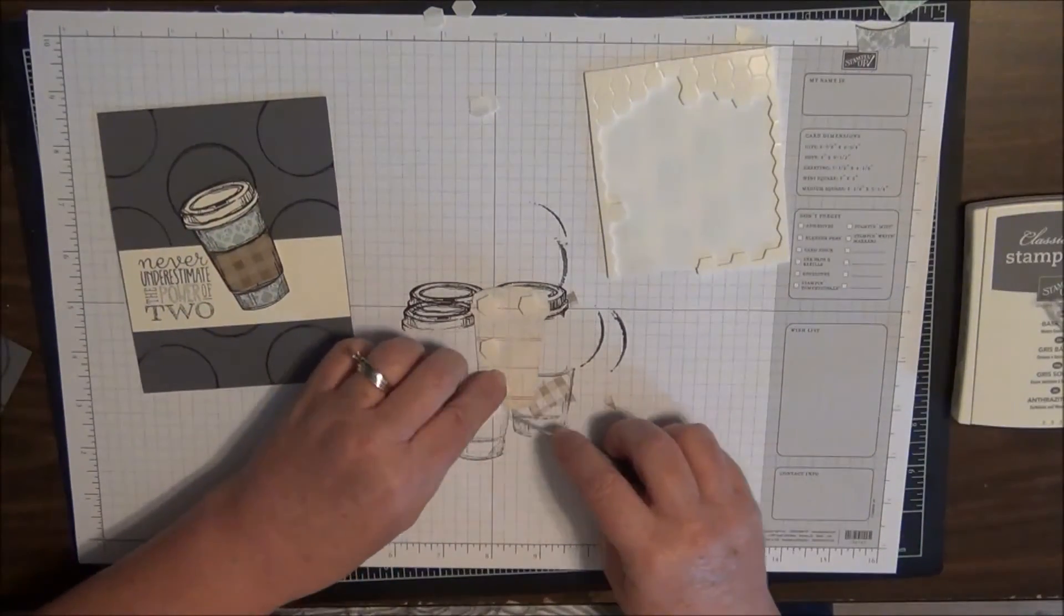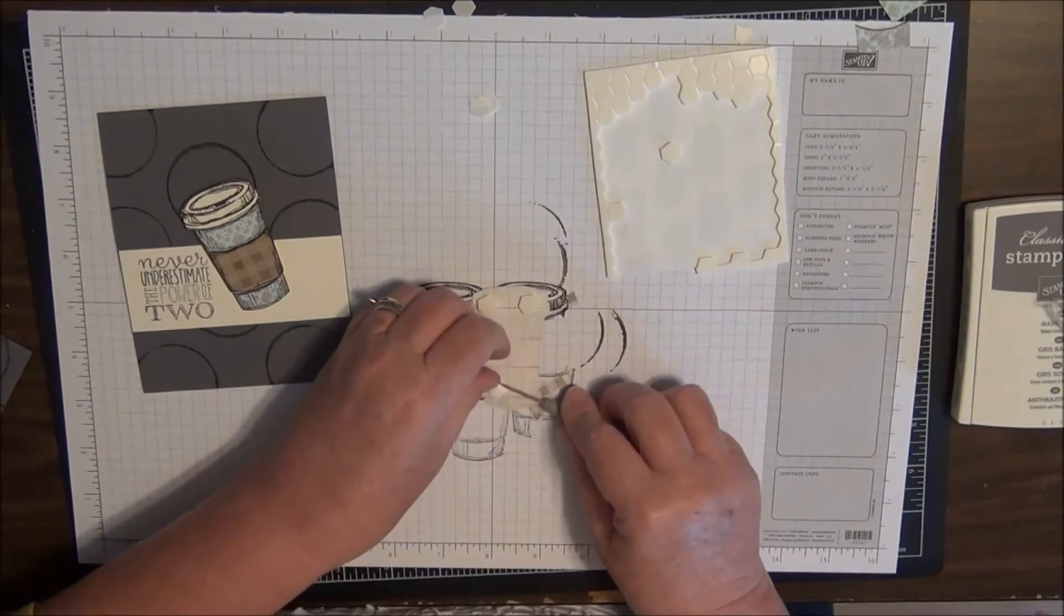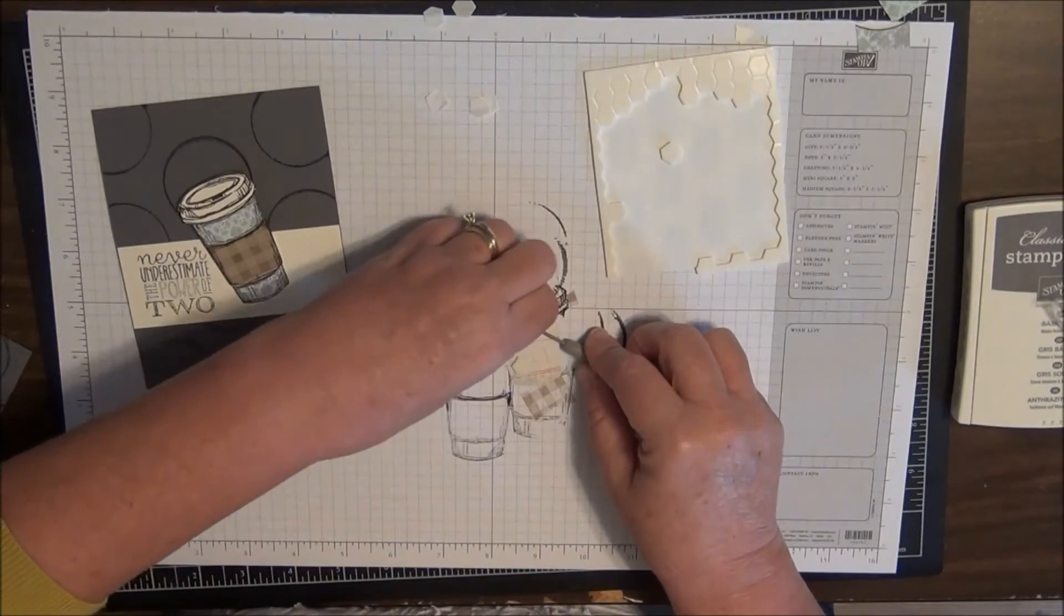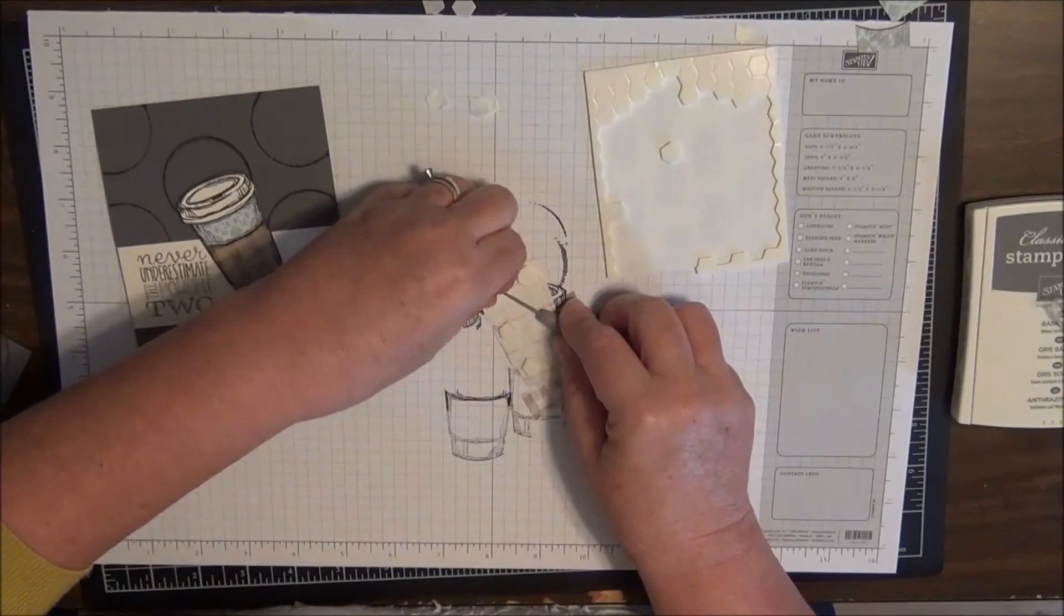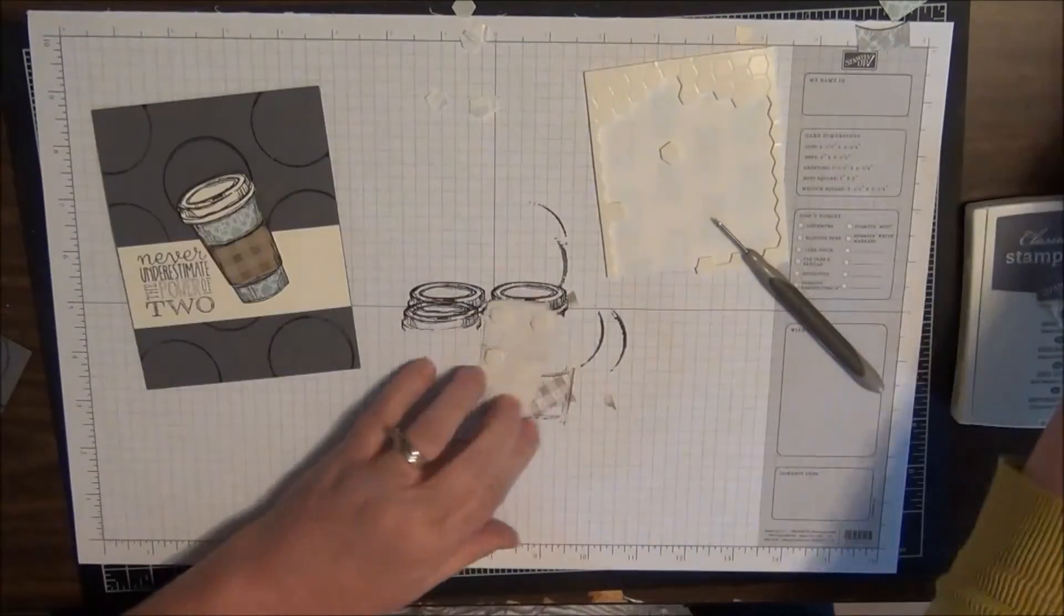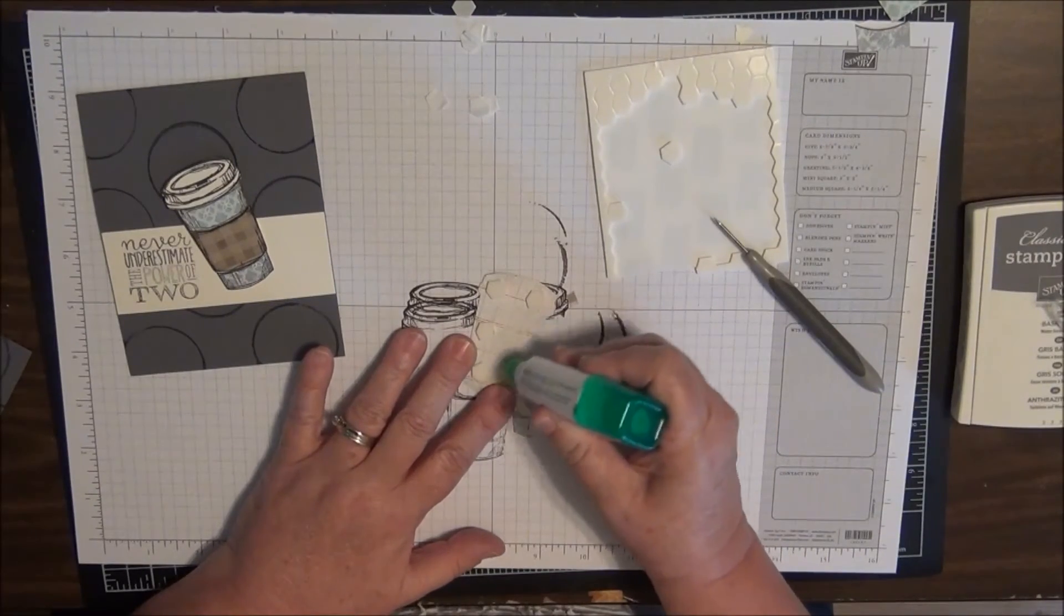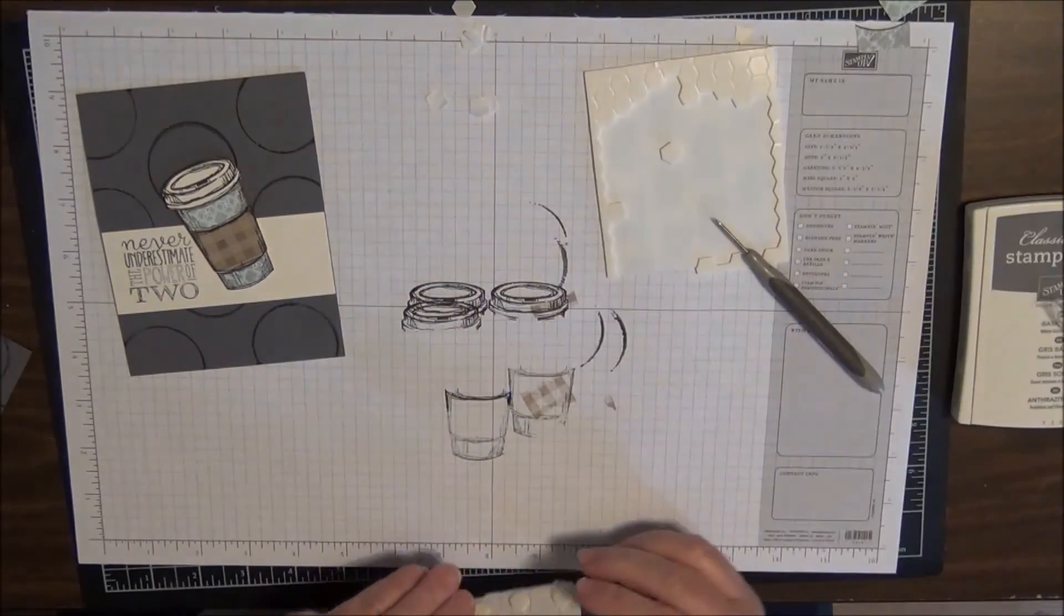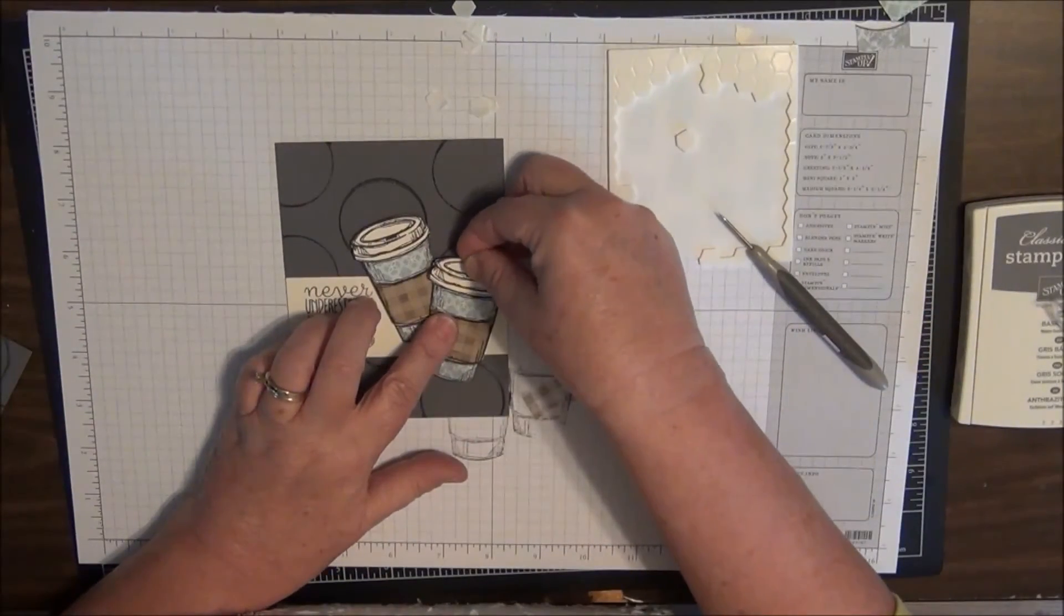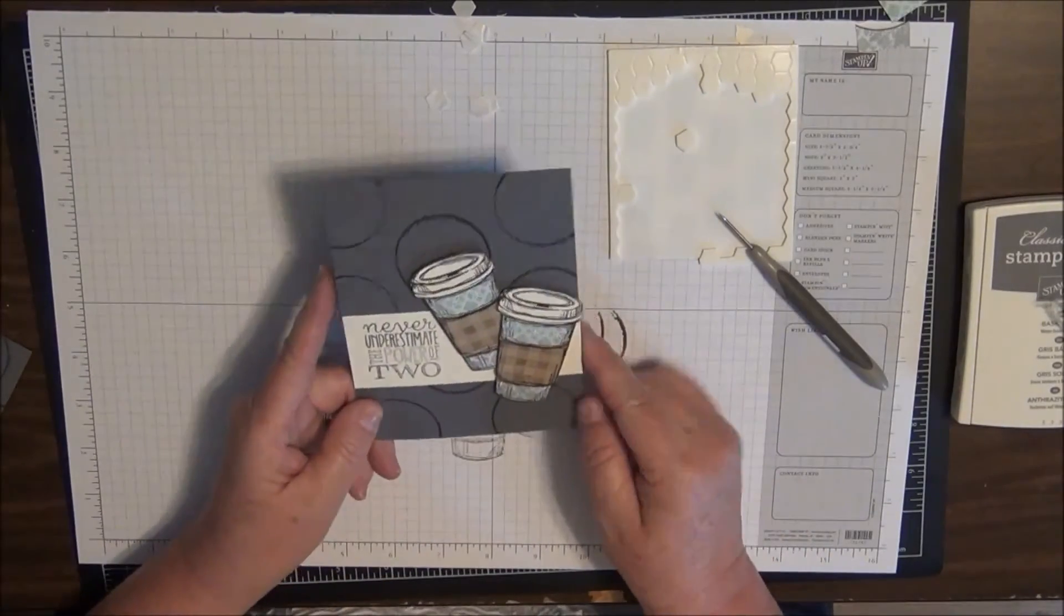Come on. And what I will do is just take a little bit of Tombow, just a little bit, so that kind of secures on there. And I'm going to layer those just like that. And there's my card. Now I'm telling you, it's addicting.